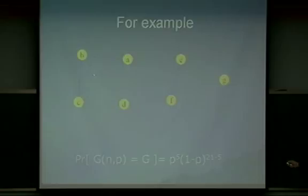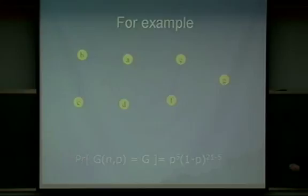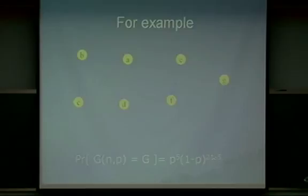Here is an example. We have seven vertices, so N equals seven. The probability G(N,P) equals G — our random graph becomes this particular labeled graph — is P^5 times (1-P)^16, because there are five edges and 21 minus 5 equals 16 non-edges. Seven-choose-two is 21. So the probability is P to the M times one minus P to the 16. We have three connected components in this example.